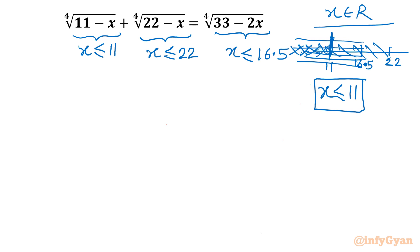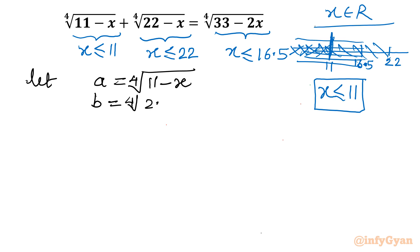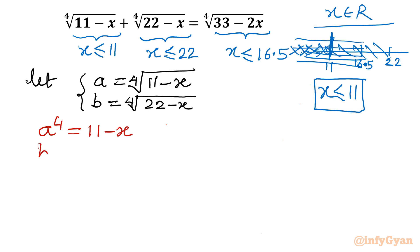Now I will introduce our substitution. Let a equal the 4th root of (11 minus x), and b equal the 4th root of (22 minus x). Raising both sides to the 4th power: a⁴ equals 11 minus x, and b⁴ equals 22 minus x.